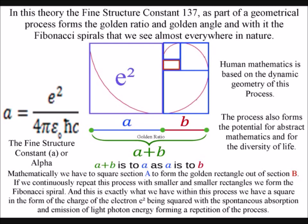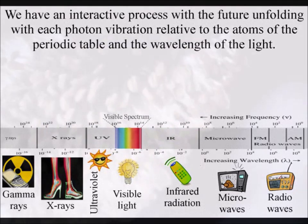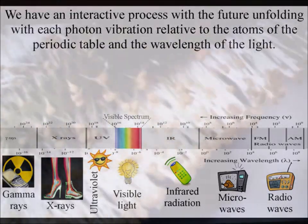And this is exactly what we have within this process. We have a square in the form of the charge of the electron being squared, with the spontaneous absorption and emission of light, photon energy, forming a repetition of the process.